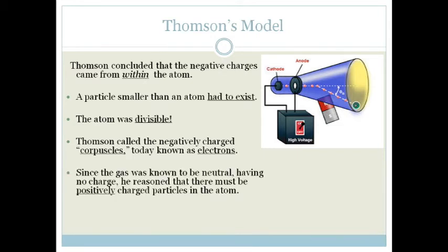Since the gas was said to be neutral, or known to be neutral, which means it had no charge, if there were negatively charged particles, there obviously had to be positively charged particles in the atoms. But he could never find them. So he came up with the theory of the plum pudding model.